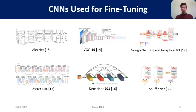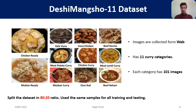We used seven popular CNNs for our experiments: AlexNet, VGG16, GoogleNet, Inception V3, ResNet101, DenseNet201, and ShuffleNet. Since there is no dedicated dataset for curry image classification, we constructed a dataset for our experiment. It contains 11 categories of Bangladeshi curry images, with 101 images in each category, collected from the web. We split the dataset in an 80/20 ratio, using the larger portion for training and the smaller one for testing.